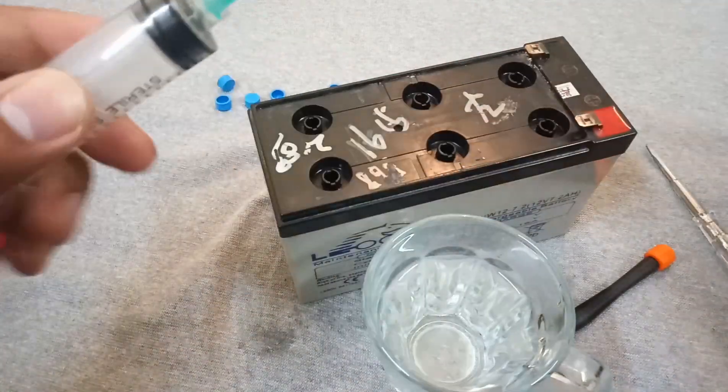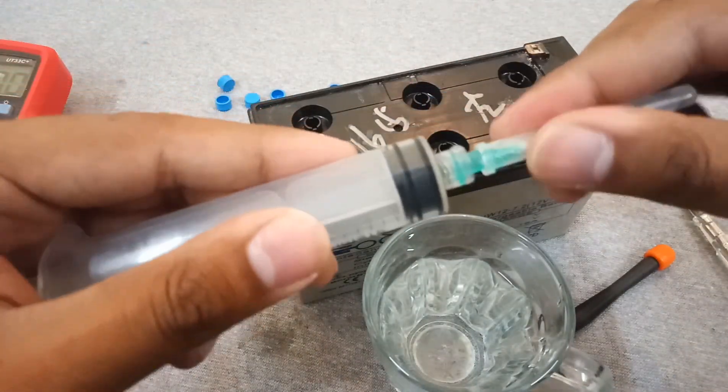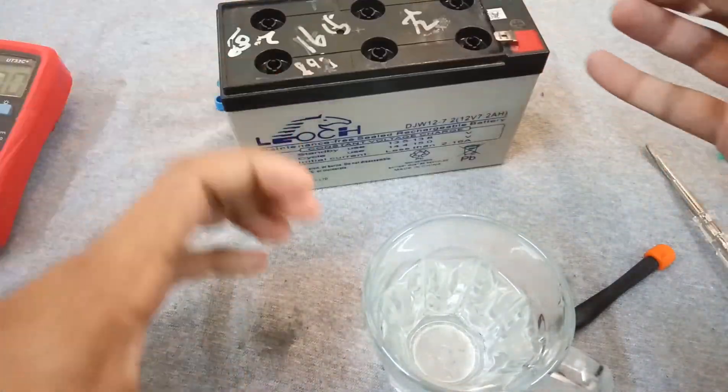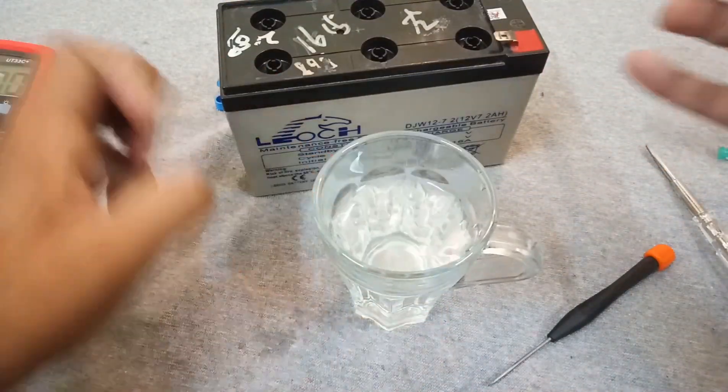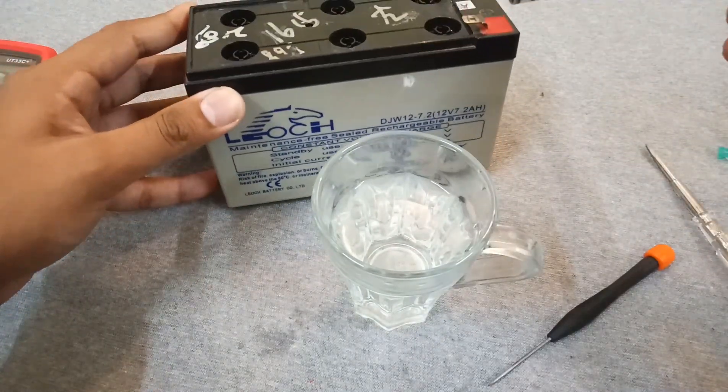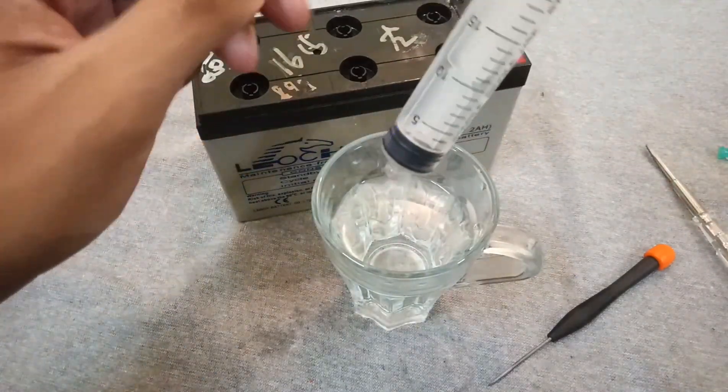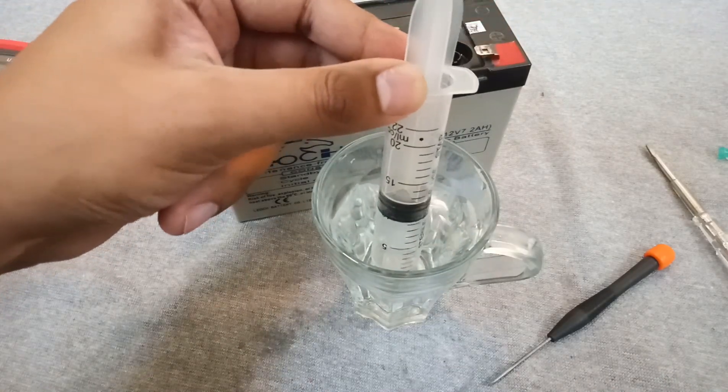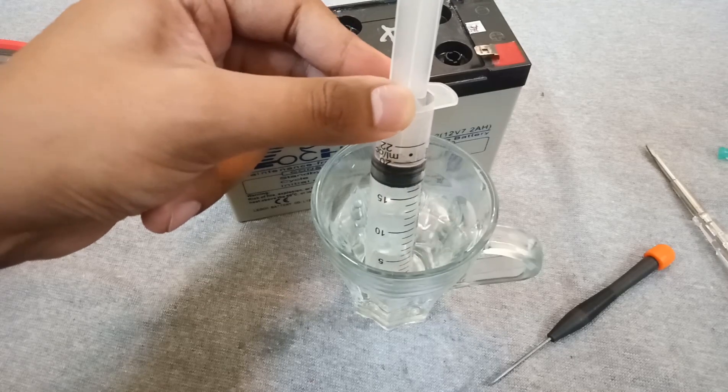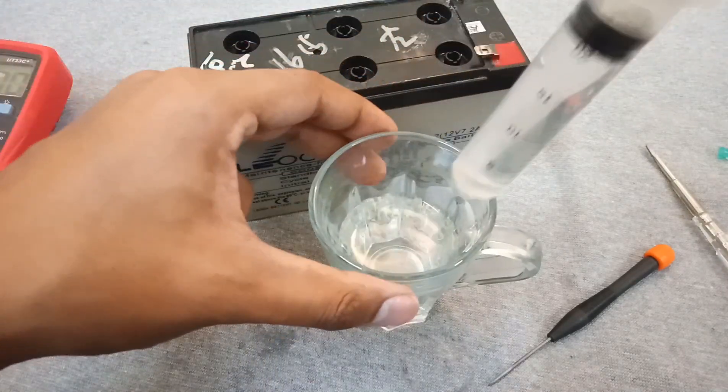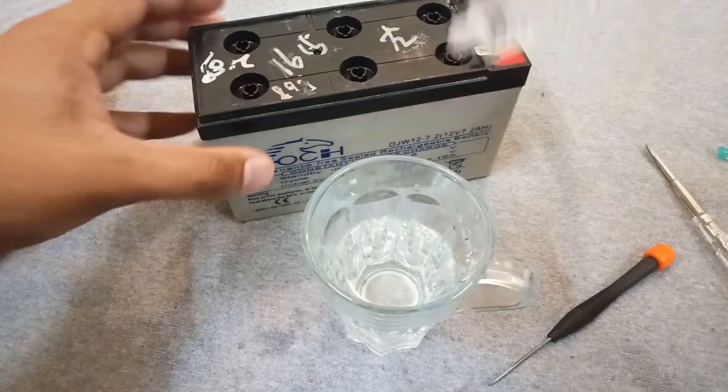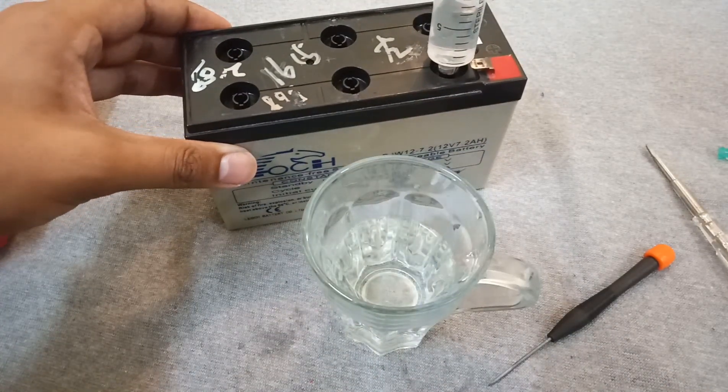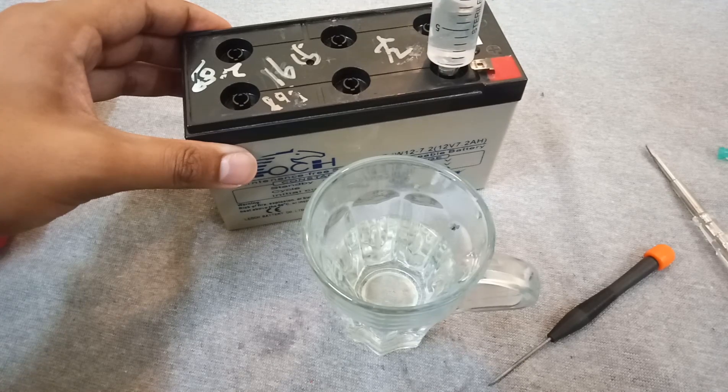I am going to add almost 4 to 5 ml per cell. This syringe is 22 ml. I will fill it up to almost 20 ml and I will fill 4 cells with this 20 ml.